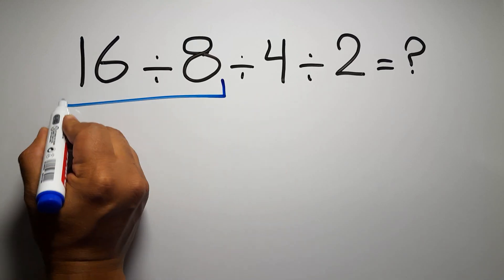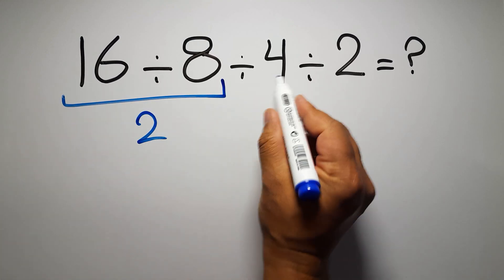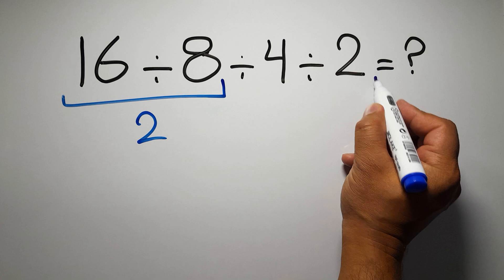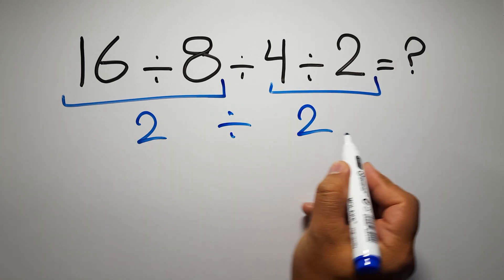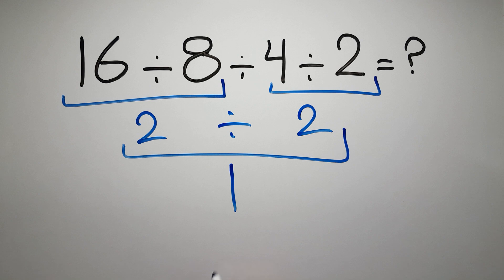16 divided by 8 gives us 2, and here we have 4 divided by 2 is just 2, so 2 divided by 2 gives us 1. But this answer is not correct because according to the order of operations, when we have more than one division in an expression, we have to work from left to right.